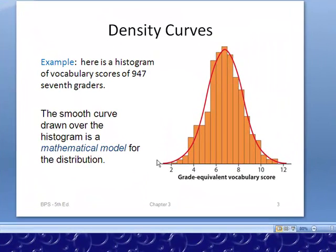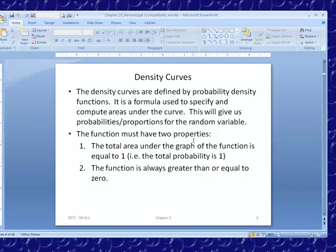The function must have two very important properties if we call it a probability density function. It's a formula used to specify and compute areas under the curve. This gives us probabilities or proportions for random variables. The function must have two properties: The total area under the graph of the function equals 1 - the total probability is 1 - and the function is always greater than or equal to zero.